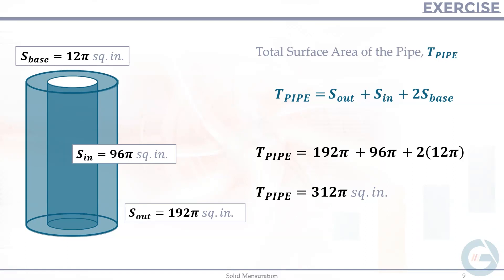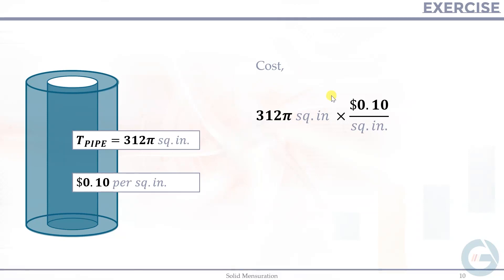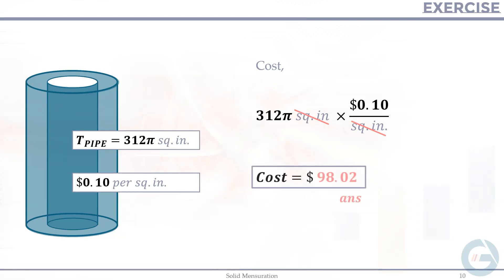To calculate the cost: the pipe has a total surface area of 312π square inches, and the paint costs $0.10 per square inch. Multiplying: 312π × $0.10 = $98.02. The square inch units cancel, leaving the dollar unit. So the final answer is $98.02 to paint the pipe.